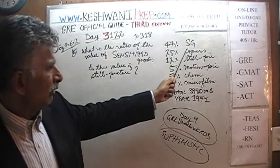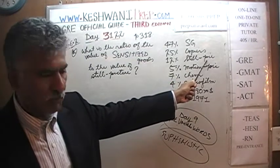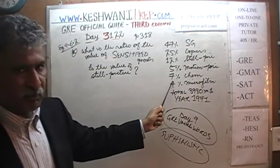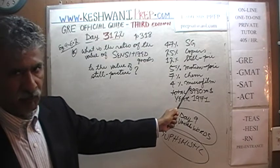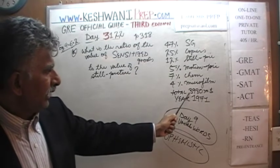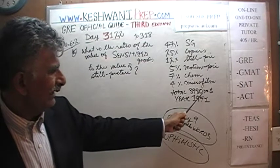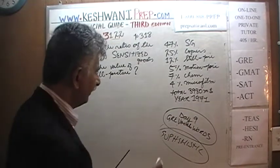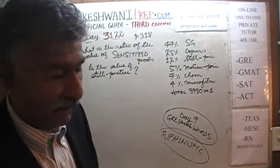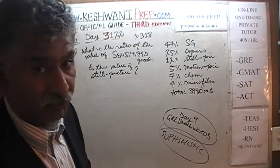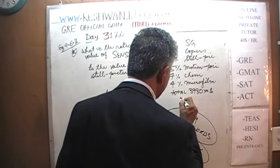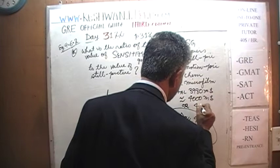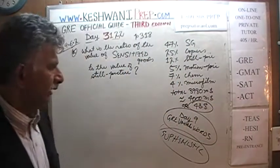Copiers represent 25% of total value. 12% was still picture equipment. 5% was motion picture equipment. 7% came from chemicals. 4% came from microfilm equipment. They had a total production of 3,980 million dollars. Even though it is exactly 3,980 million dollars, we are not going to use that figure — we are just going to approximate it. Let's pretend that it is 4,000 million dollars, or simply 4 billion dollars.